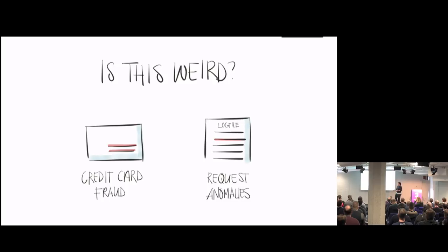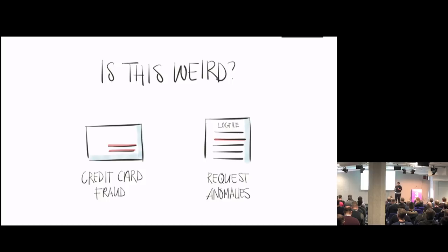All of these are supervised learning. Supervised learning is where you have a lot of data from before that says: given these features, this was the answer. You have labeled data — you know the input and you know the output, and you can learn from that.